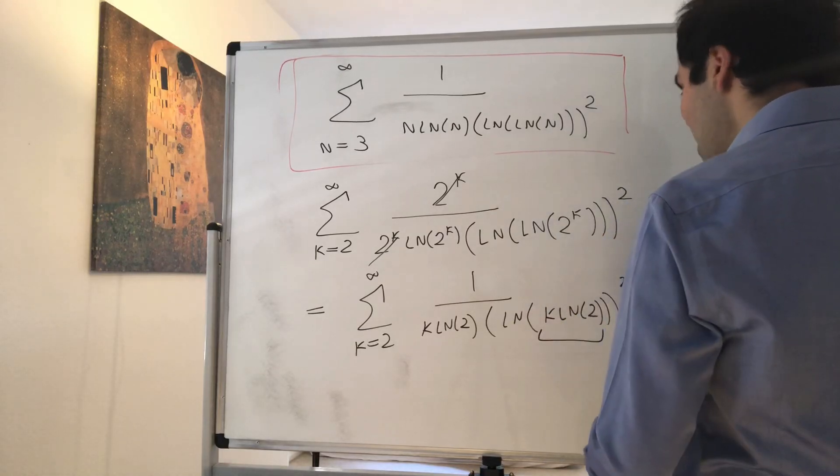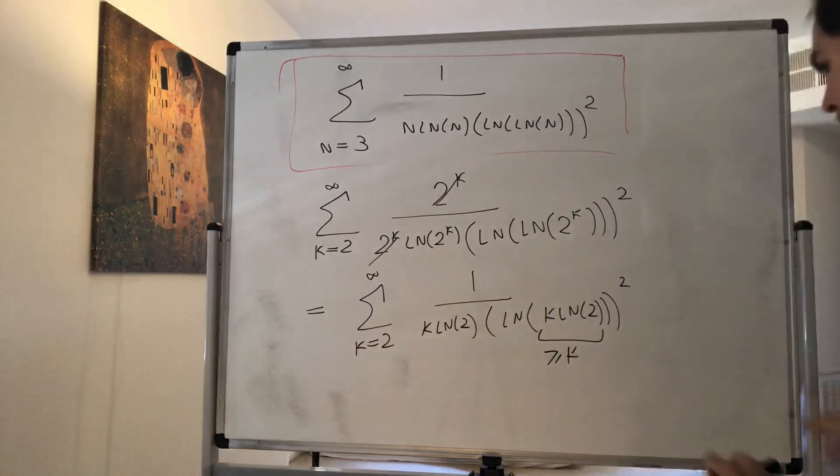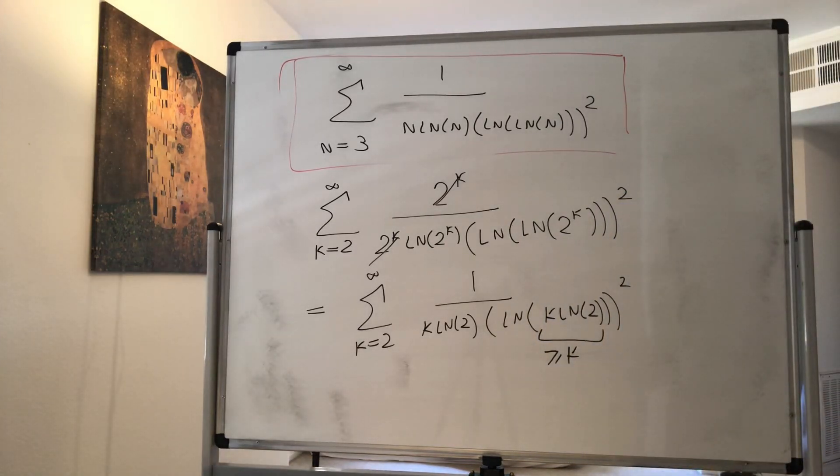But notice, in this case, k ln of 2 is greater than or equal to k, because ln of 2 is positive, and therefore, we have the opposite.